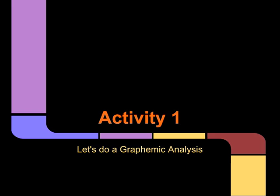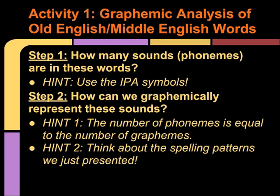Let's do a graphemic analysis activity together and demonstrate how it works. Step 1: we need to identify how many sounds or phonemes are in these words. The hint here is that we will be using IPA symbols to identify that. Step 2: we will try to determine how we can graphemically represent these sounds. Two hints to think about: the number of phonemes is equal to the number of graphemes, and we need to think about the spelling patterns presented in the previous slides.